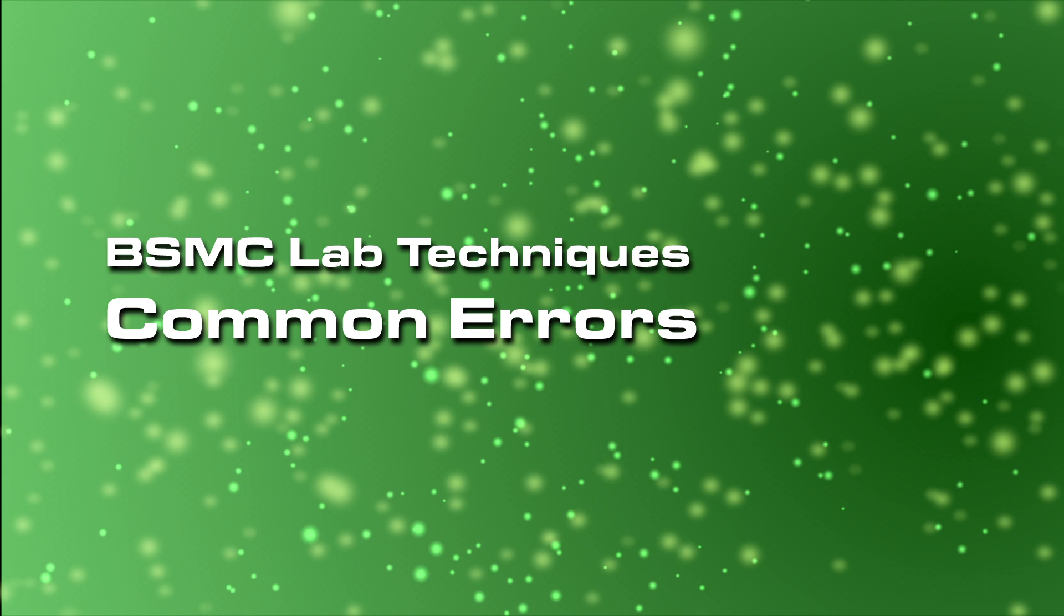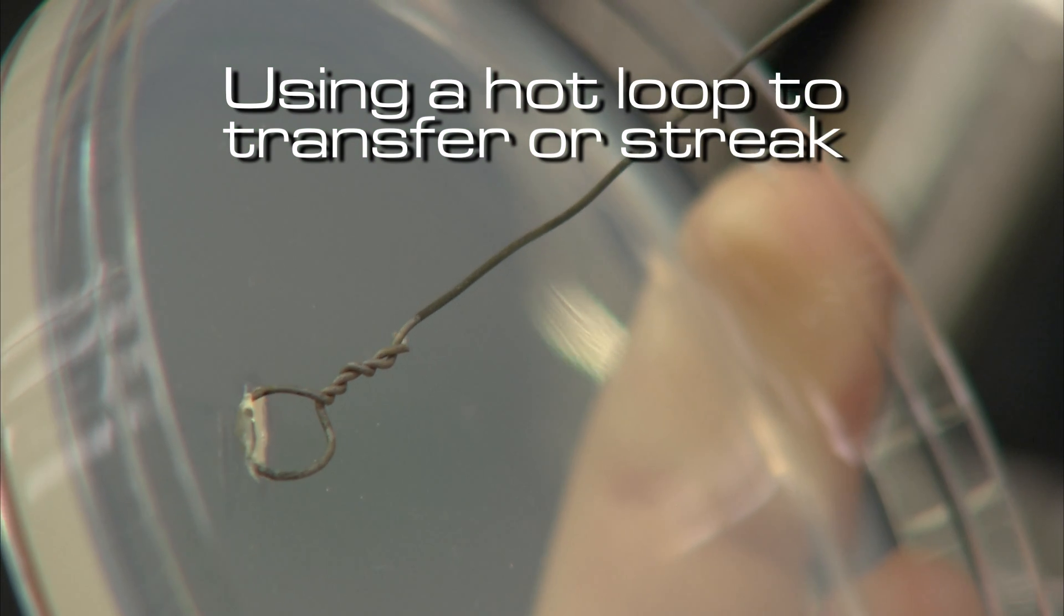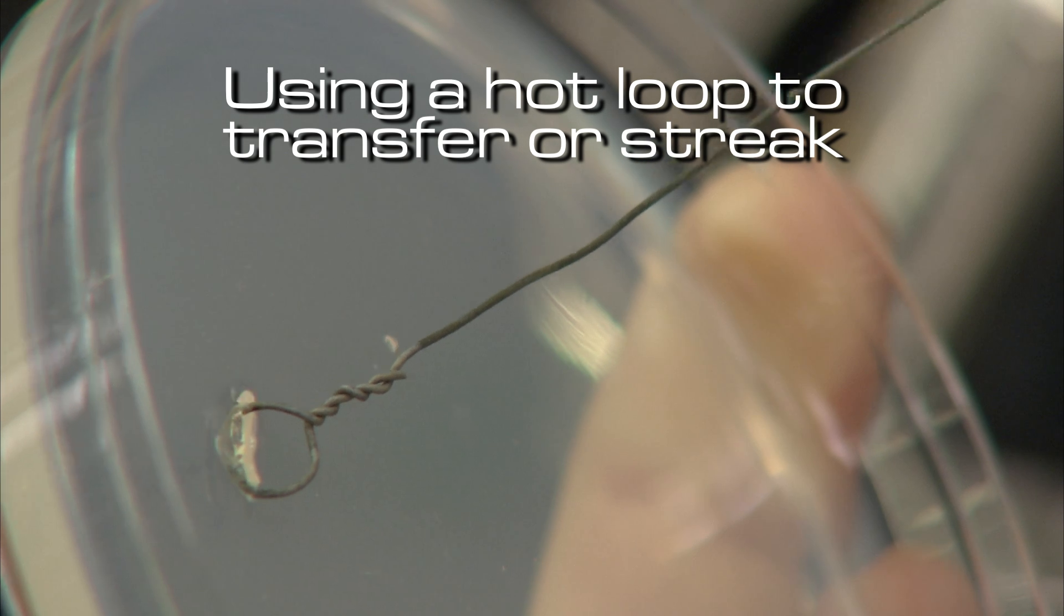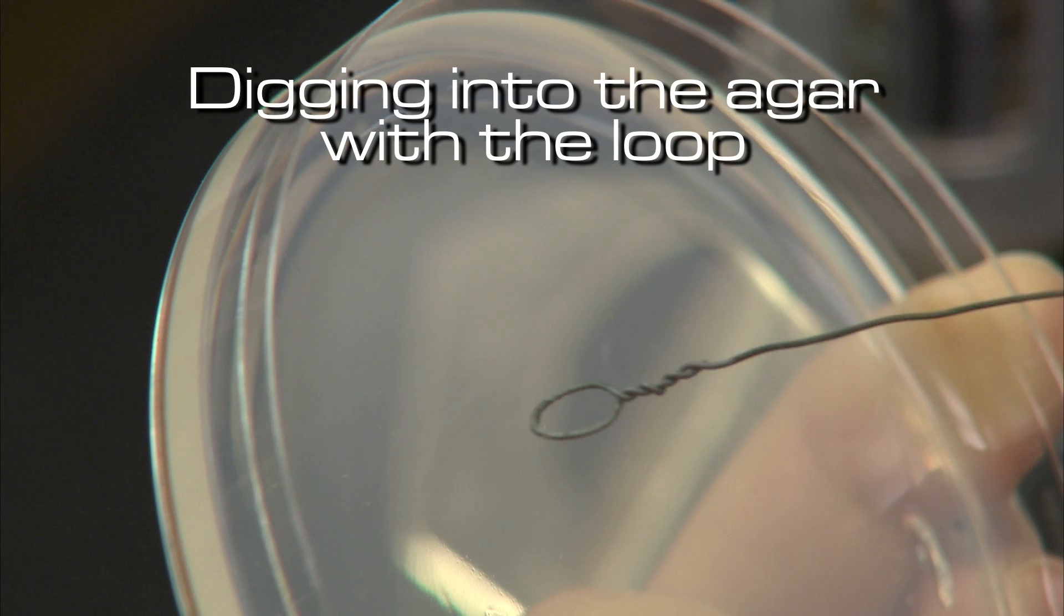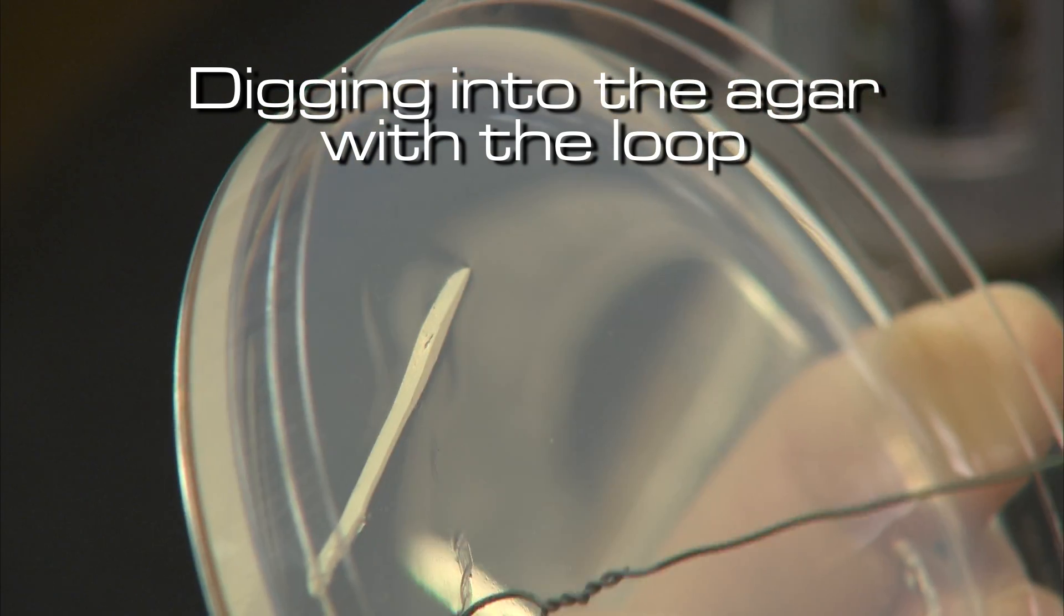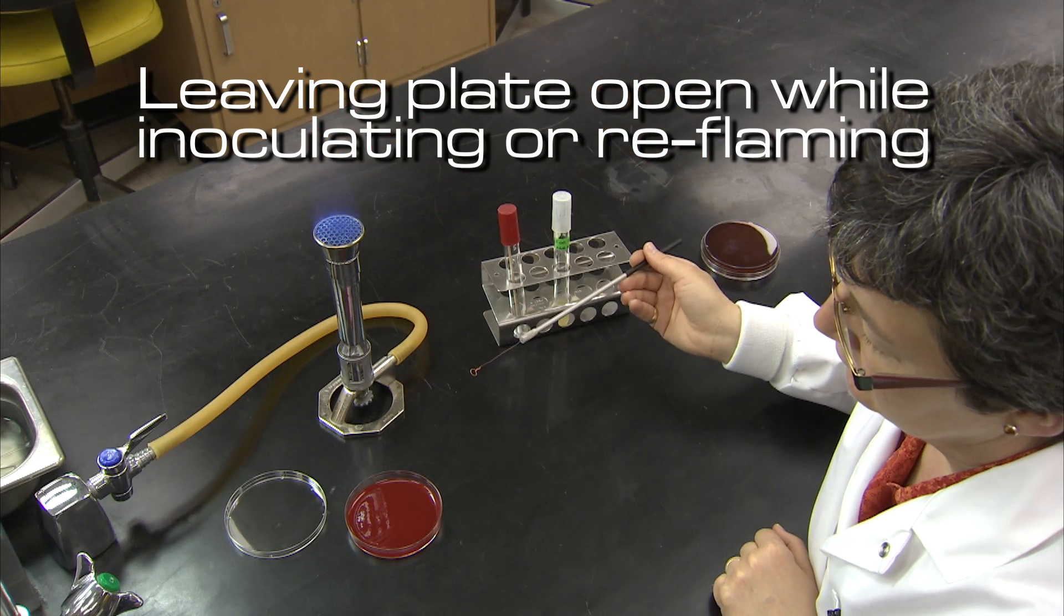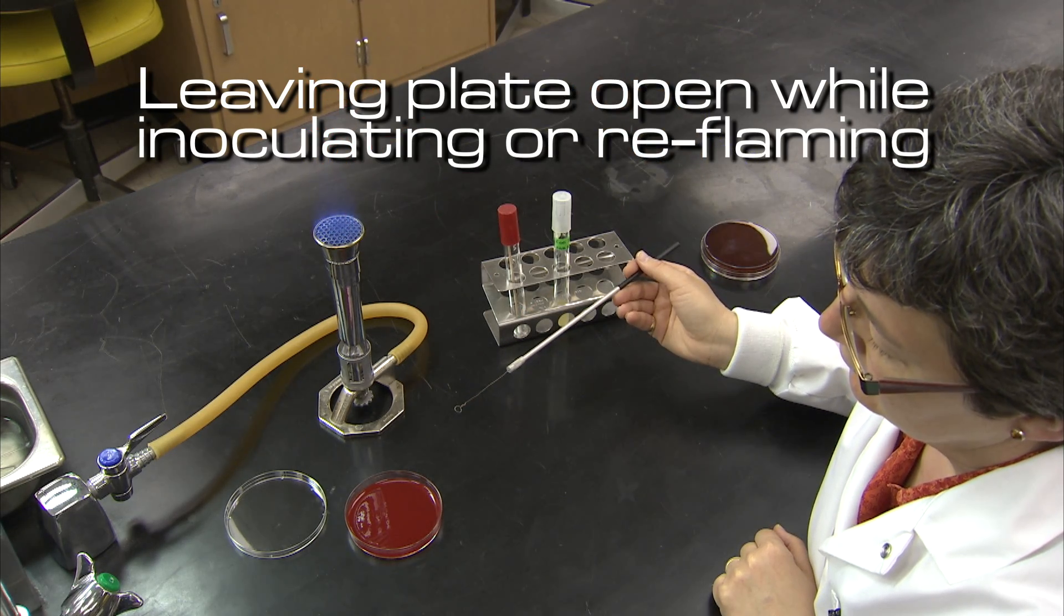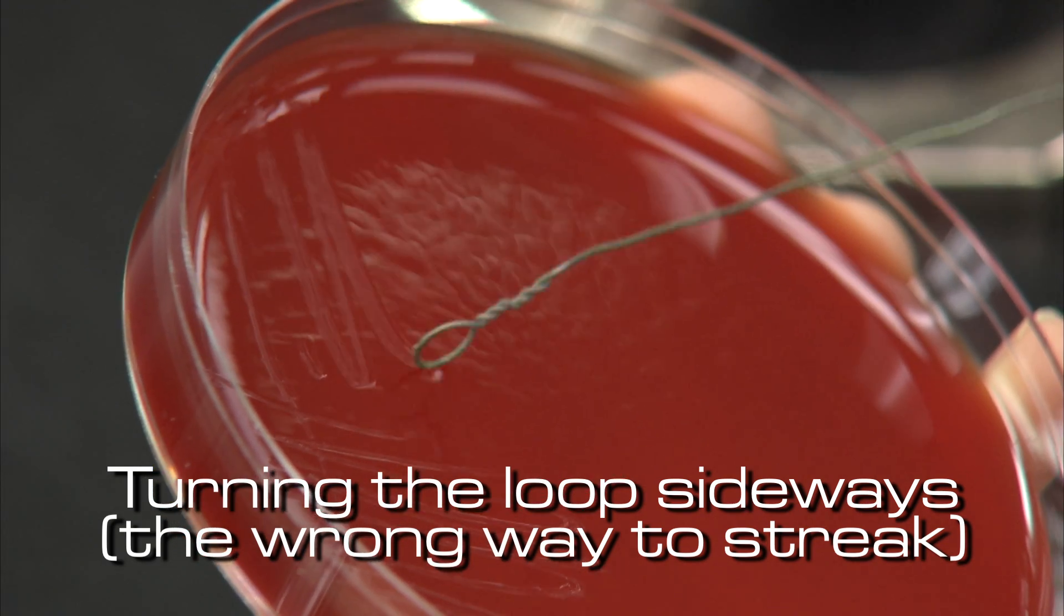Some common errors that can lead to contamination are: not waiting for the loop to cool and killing the culture or melting the plate; holding the loop or using too much force so it digs into and gouges the plate; leaving a plate open while not in use; and streaking with the edge instead of the face of the loop.